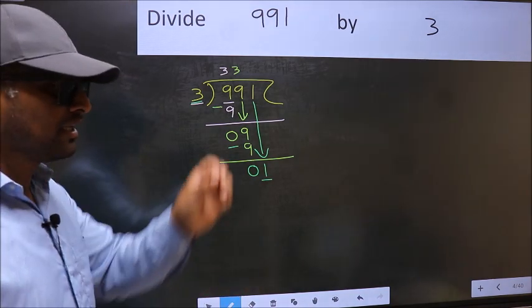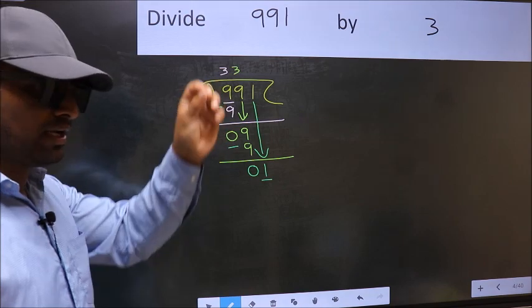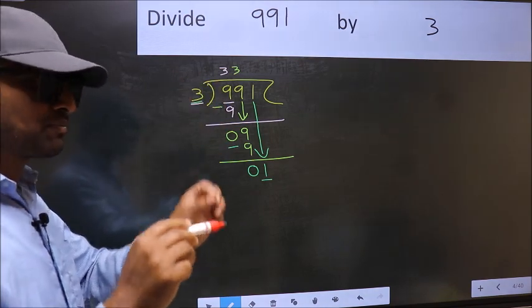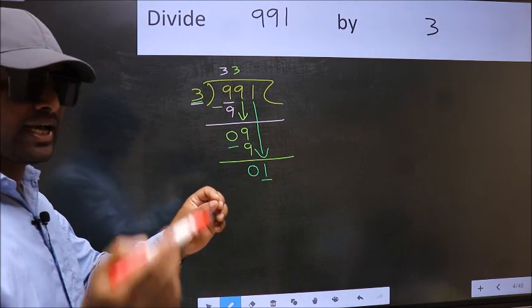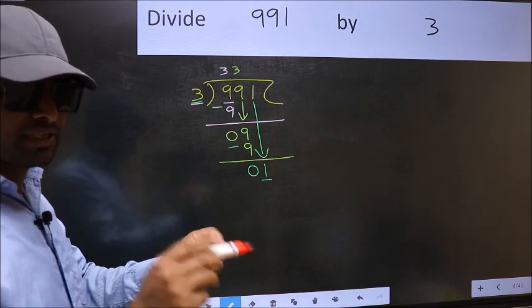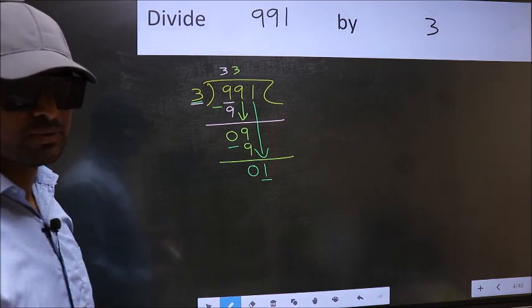I repeat. Bringing the number down, and also putting a dot and taking 0. Both at the same step, you are not supposed to do.